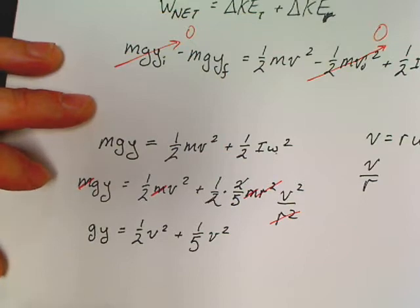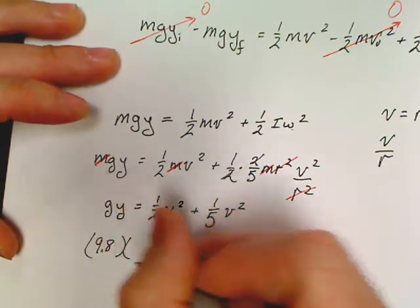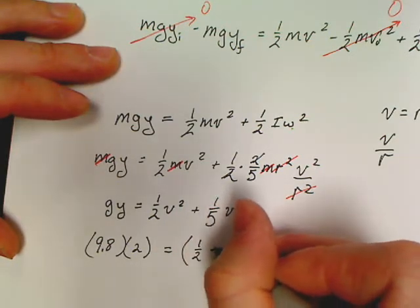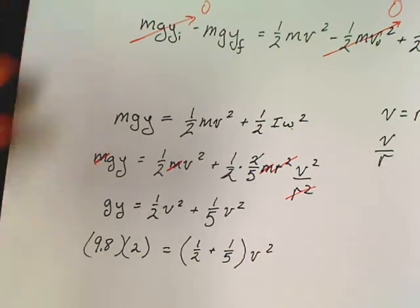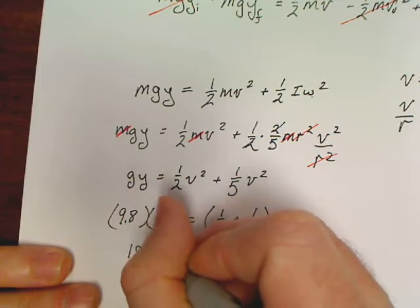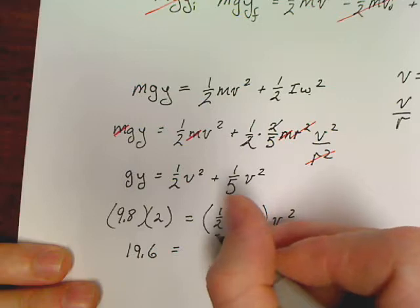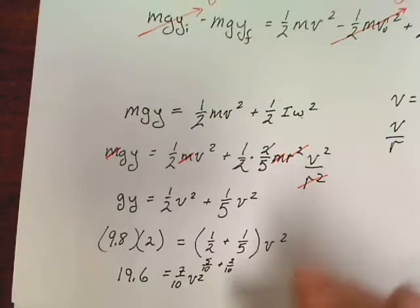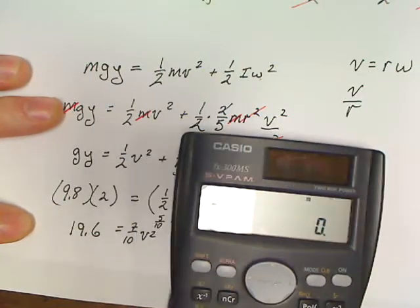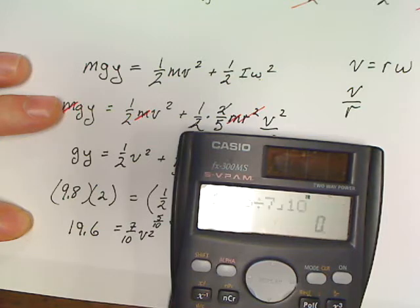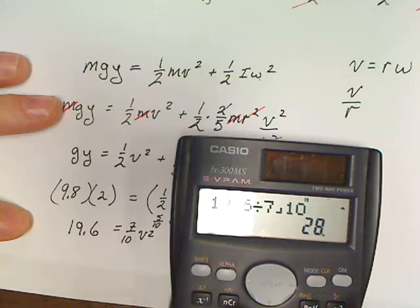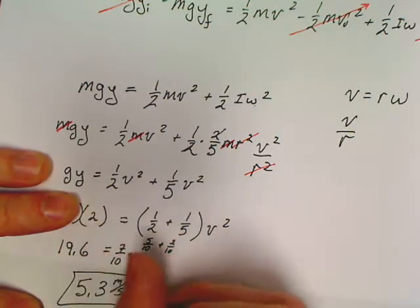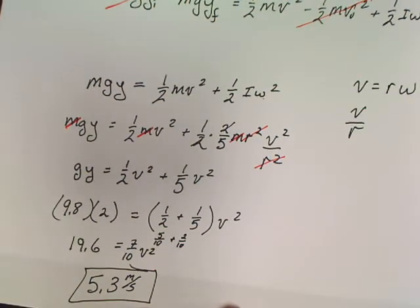It said that the hill was 2 meters tall in this question. So this is 9.8 times 2 equals, I'm going to factor v² out, 1/2 plus 1/5 v². That's 19.6 over there. Let's see, this would be 5/10 plus 2/10, so equals 7/10 v². So what is 19.6 divided by 7/10 is 28. Don't forget to take a square root. Square root, answer equals 5.3 meters per second. That's it. That's as hard as any of these questions get. And look at what happened. Most of it canceled out.